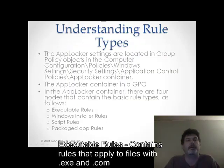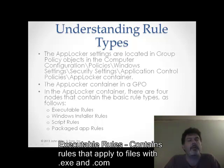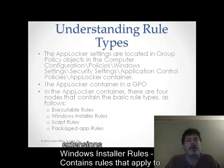The AppLocker settings are also group policy objects, and they're located in the computer configuration, policies, Windows settings, security settings, application control policies, AppLocker container. Remember that this is also something that can be controlled at the domain level. In the AppLocker container, there are four nodes that can contain basic rule types.